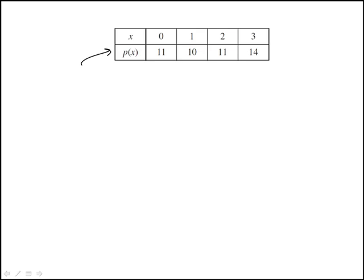Here we're shown this table that shows selected values for function p, and we're told that p is a quadratic polynomial, which means it has the form ax squared plus bx plus c. The question is, what is the value of the function when x is 10? So p of 10.